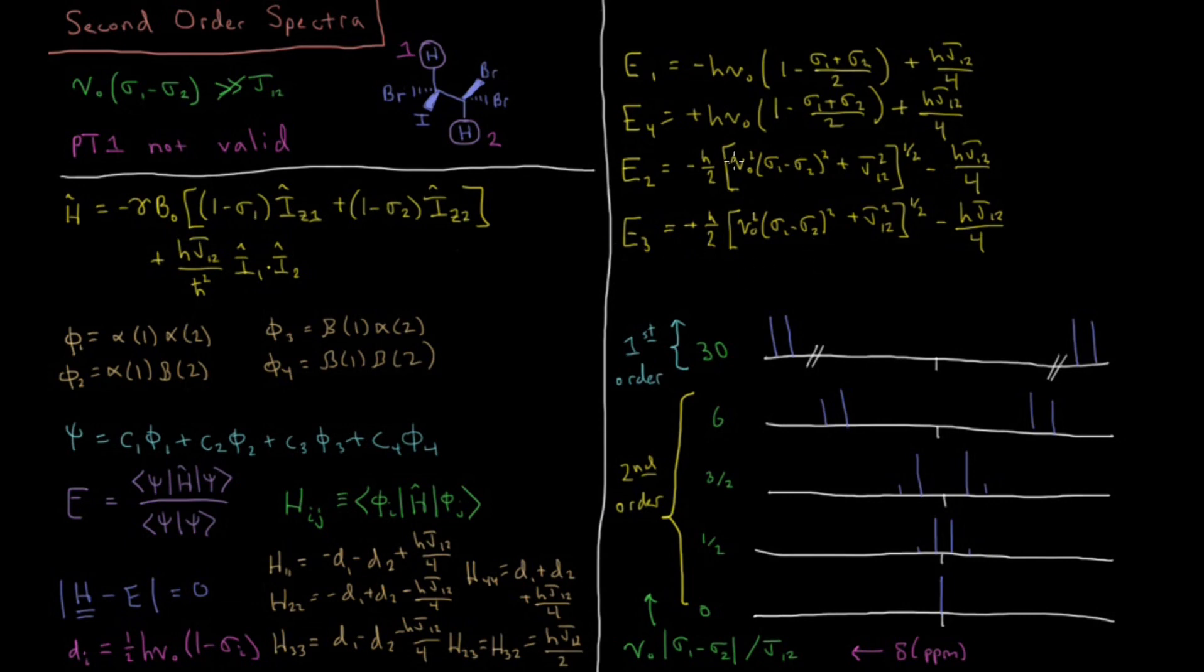So what this does here is you have this nu naught times sigma 1 minus sigma 2 term and you have this J12 term so what happens is in the limit that nu naught times sigma 1 minus sigma 2 is much much greater than J12 then this just becomes nu squared sigma 1 minus sigma 2 squared square root so in the limit of these peaks being way further apart than their coupling then the second and third energy levels just become minus H over 2 nu naught times sigma 1 minus sigma 2 then minus H J12 over 4. So in the limit that this term is much much greater than the coupling this term kind of disappears and it just goes to the square root of this part of it.